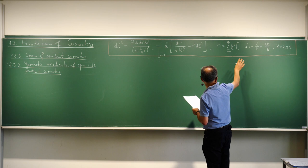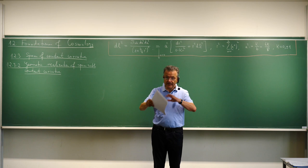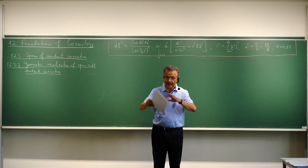So what we have shown is that the line element for a space of constant curvature with K = +1, or B positive, can be realized by the geometry of a sphere embedded in a Euclidean space.